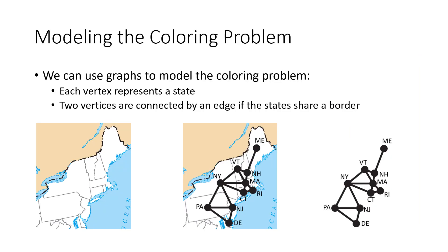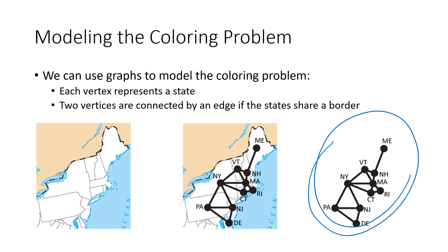We're going to use graphs to model the coloring problem. Every vertex is going to represent a region, or in this case a state on our map. Then we connect two vertices if those two states share a border. We end up with a graph that looks something like this, and once we have our graph, like we've done in other similar problems, we're not going to think about the original problem — just focus on the graph.